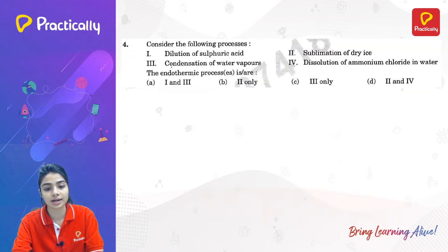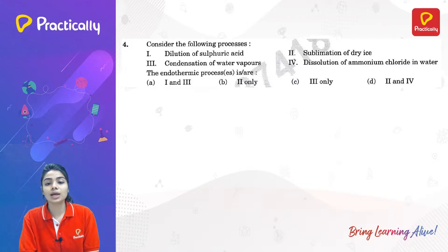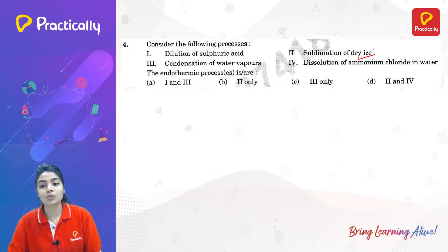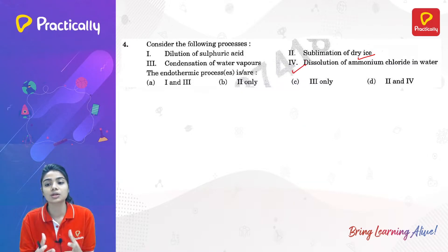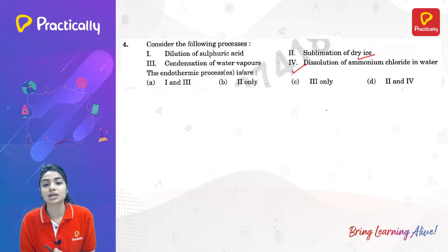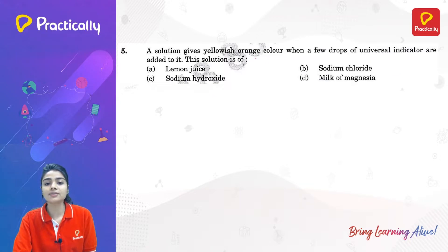Consider the following processes: dilution of sulfuric acid, condensation of water vapor, sublimation of dry ice, and dissolution of ammonium chloride in water. The endothermic processes are sublimation of dry ice — where dry ice converts to the gaseous state — and dissolution of ammonium chloride in water, which is the opposite of a neutralization reaction (an exothermic reaction). So the answer is option D — second and fourth.